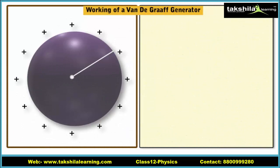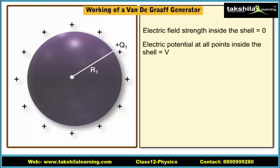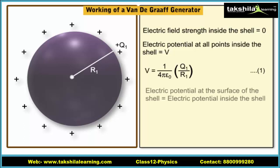To understand the principle behind the working of a Van de Graaff Generator, let us consider a large conducting shell of radius R1 with a charge plus Q1 on it. This charge is uniformly spread over the conducting shell. For such a charged conducting shell, we know that the electric field strength inside the shell is zero and the electric potential V inside the spherical shell has the same value at all points inside the shell. We also know that the electric potential at the surface of the spherical shell is equal to the potential inside the shell.